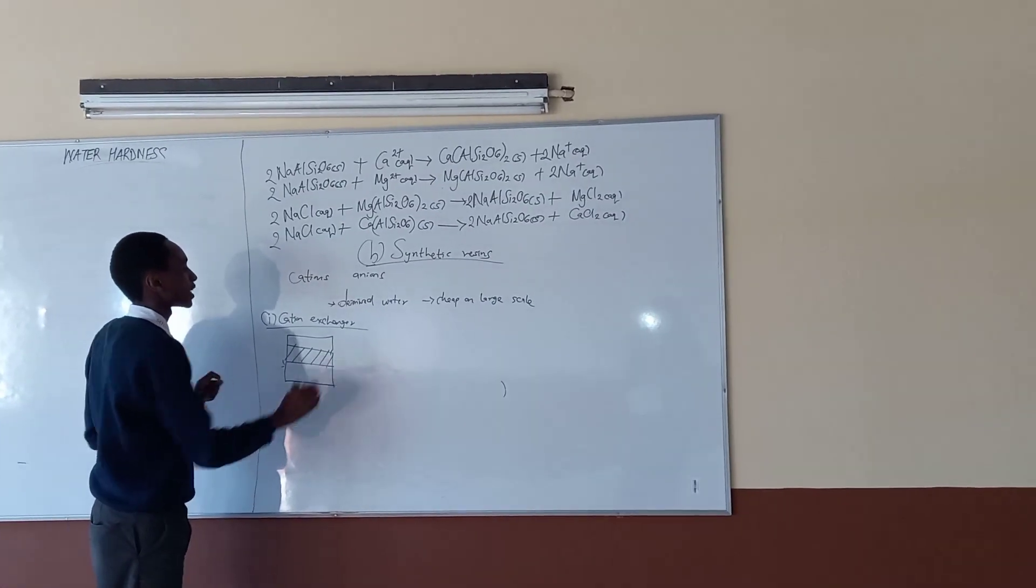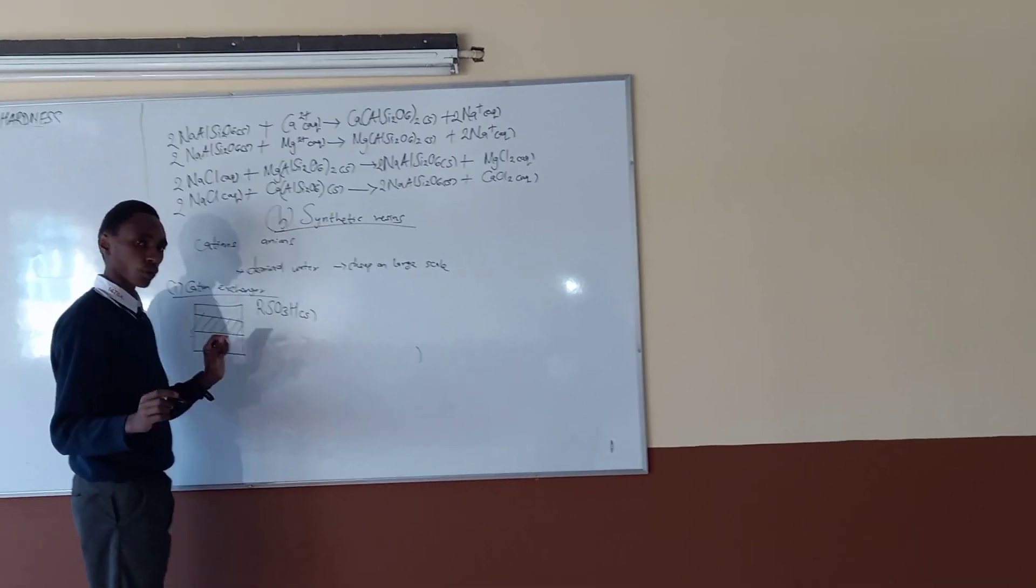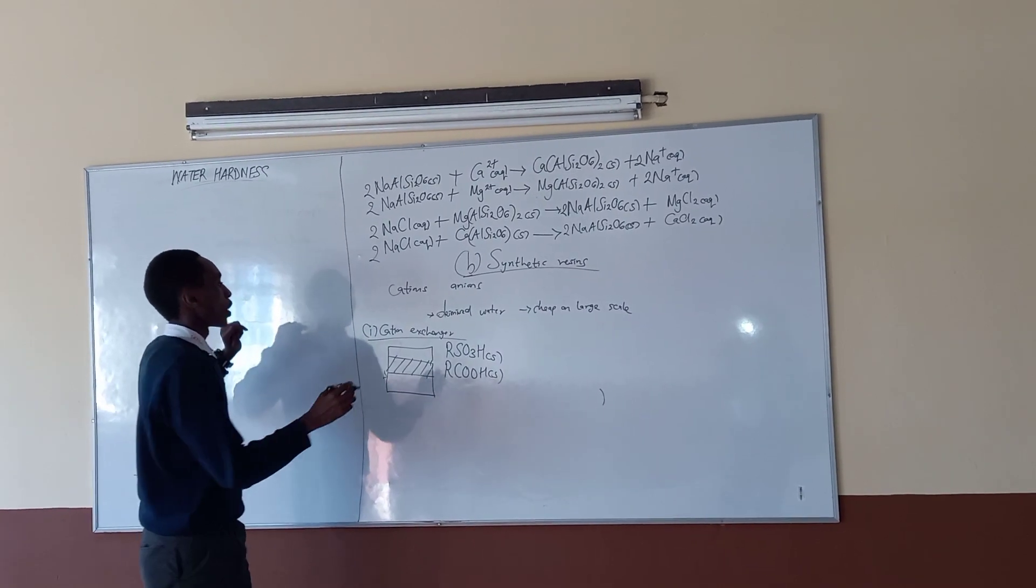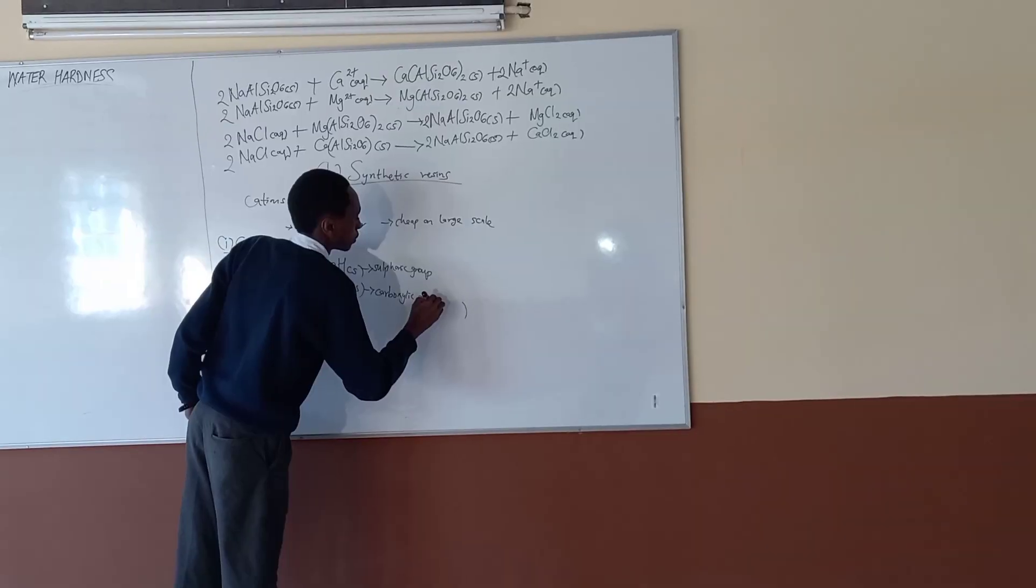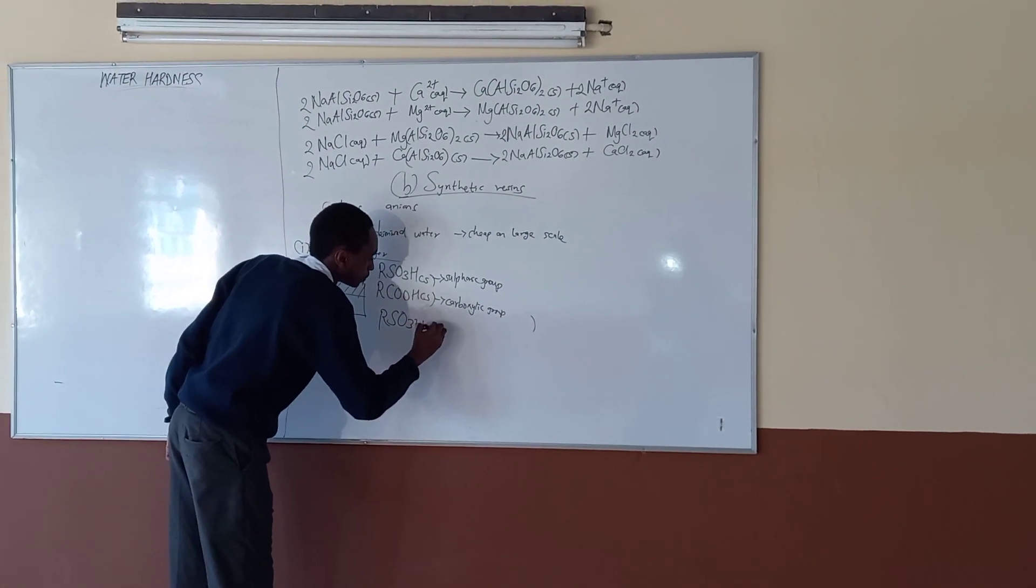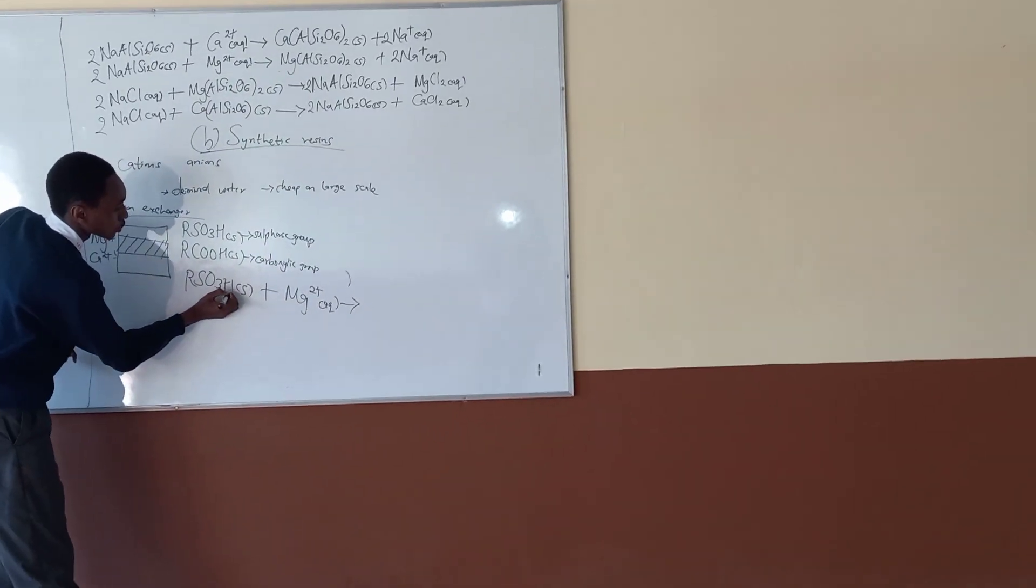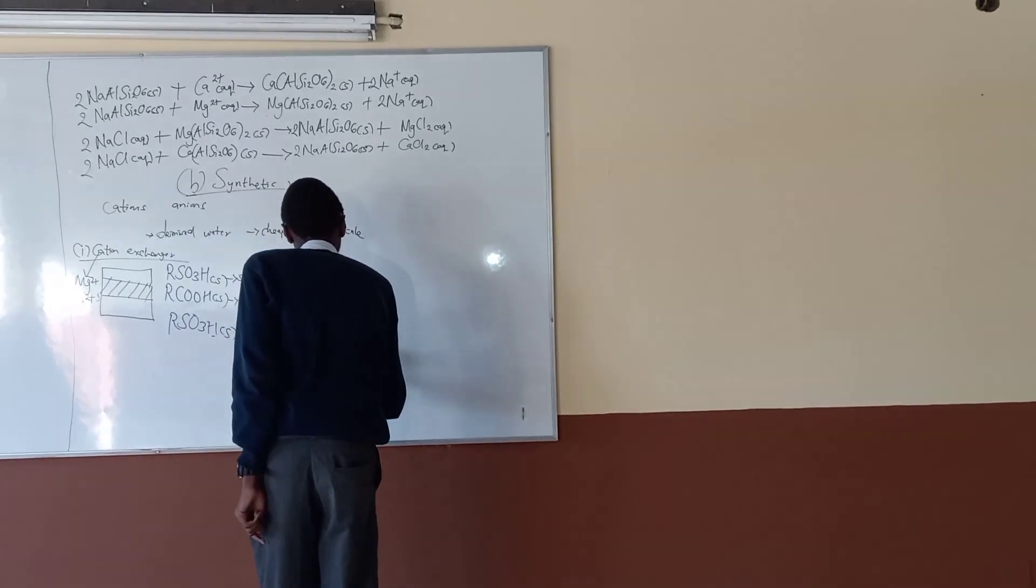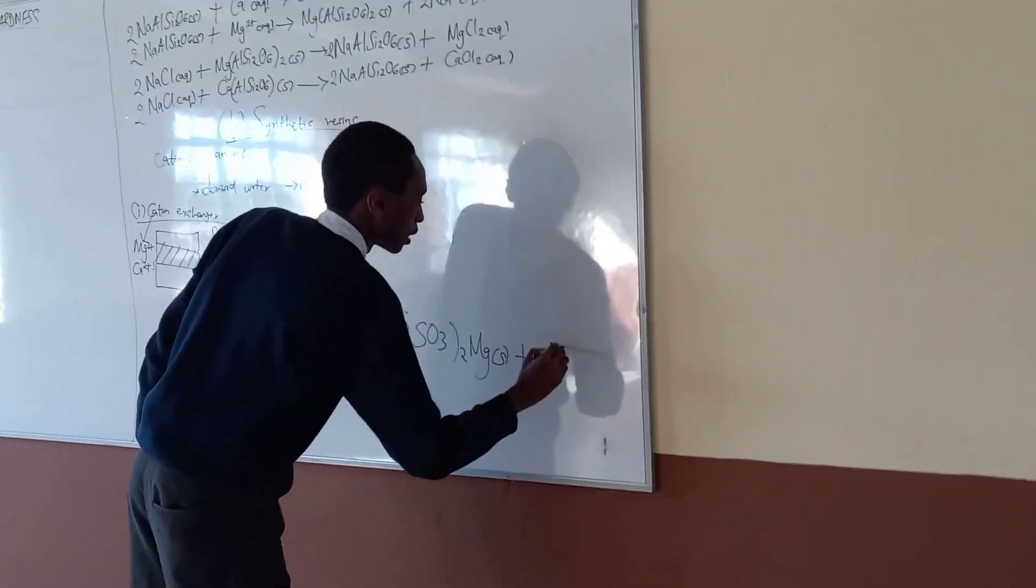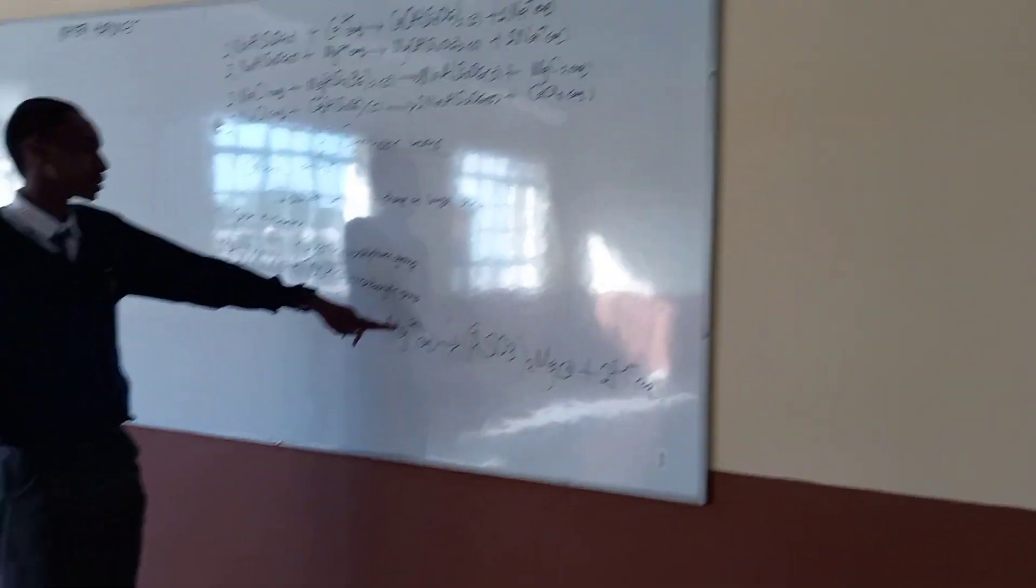So what we have here is synthetic resins. And the synthetic resins in the cation exchanger is either a sulfonic group, RSO3H solid, or a carboxylic group, RCOOH solid. The cation exchanger, our aim is to remove the cations, which are magnesium and calcium. So what happens is, let's say the instance of the sulfonic group, RSO3H solid plus magnesium ions aqueous. The magnesium replaces the hydrogen from the sulfonic group. So we get (RSO3)2Mg solid plus 2 hydrogen ions aqueous. So it appears to be balanced. That's simply it. The same will apply to calcium because they have the same valence charge.